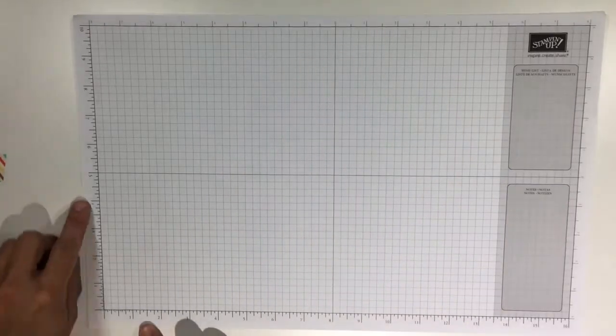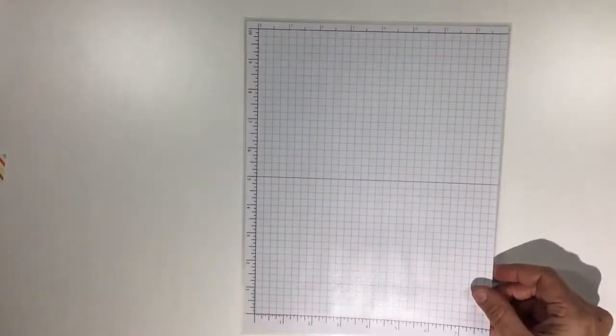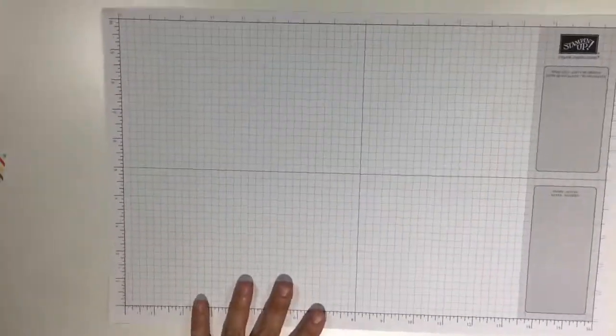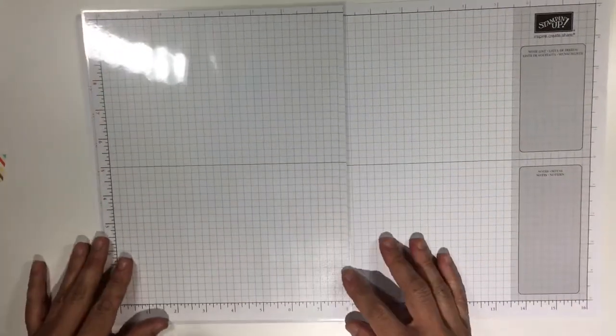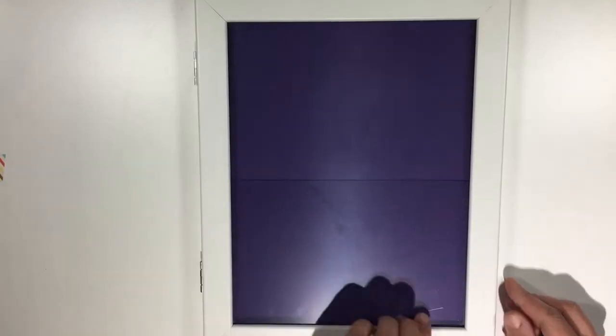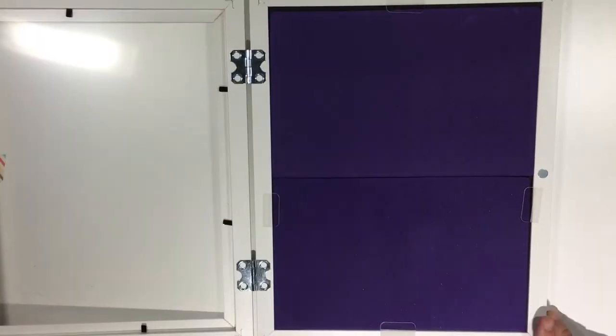Next, I'm going to take a piece of Stampin' Up! grid paper and I'm going to cut it down the center on the 8 inch mark and then I'm going to flip it around and make sure that it is exactly 8.5x12 inches tall.